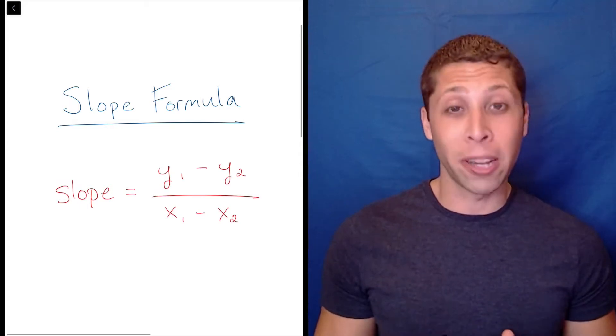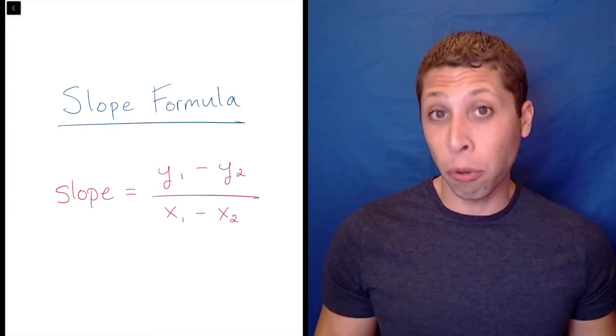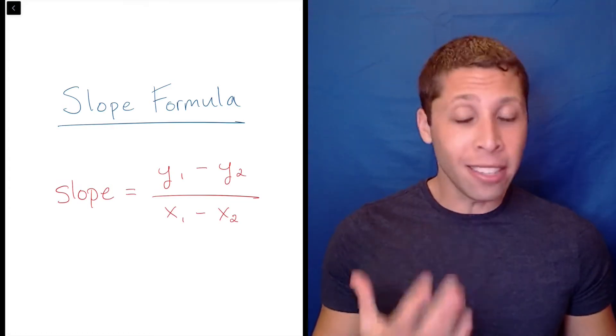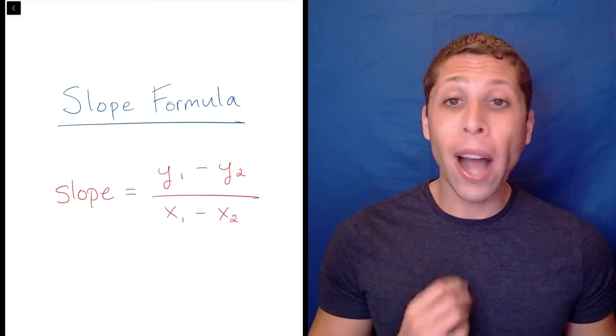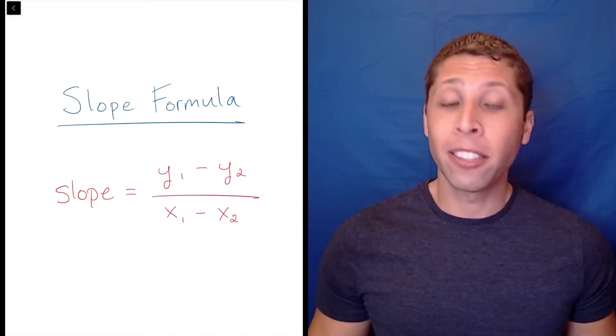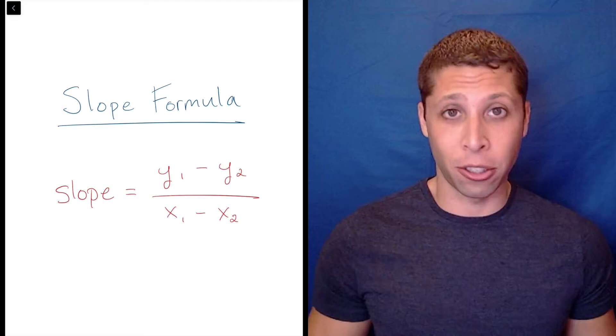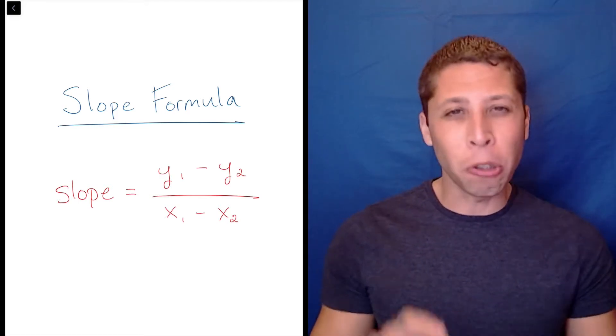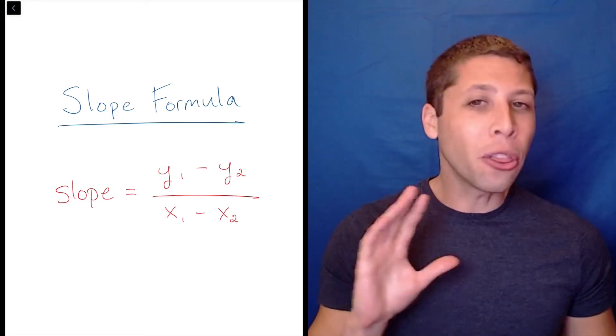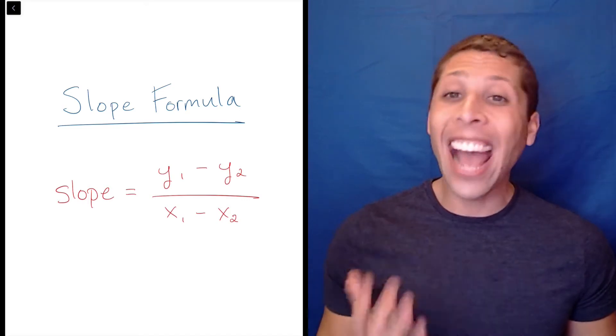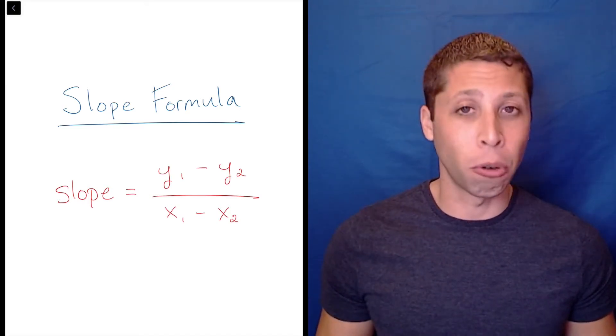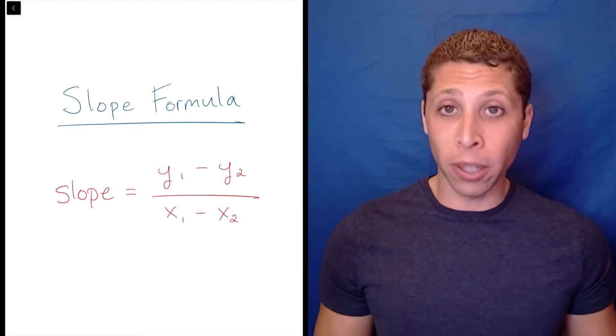To find the slope between two points, you need to use the slope formula. In my opinion, the easiest version of this formula is y1 minus y2 divided by x1 minus x2. A lot of people get confused by those little ones and twos, but those are subscripts. They're not actually numbers that get worked into the formula. They're only there to keep you organized.